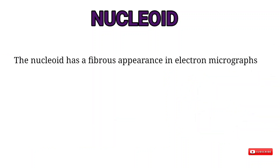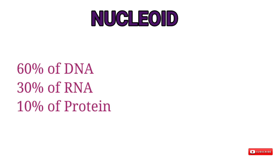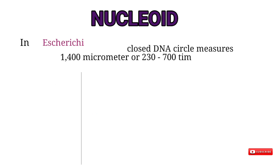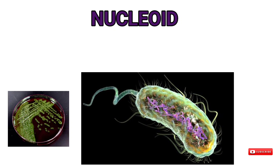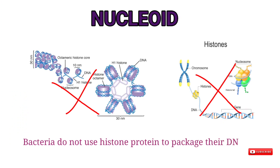The nucleoid has a fibrous appearance in electron micrographs; the fibers are probably DNA. Chemical analysis of purified nucleoids reveals they are composed of about 60 percent DNA, 30 percent RNA, and 10 percent protein by weight. In E. coli, the closed DNA circle measures approximately 1,400 micrometers — about 230 to 700 times longer than the cell — so it must be very efficiently packaged to fit within the nucleoid. Bacteria do not use histone proteins to package their DNA.